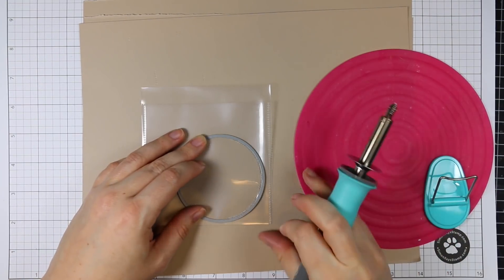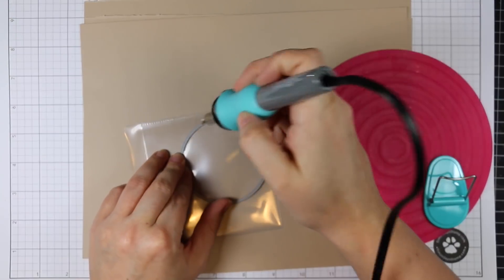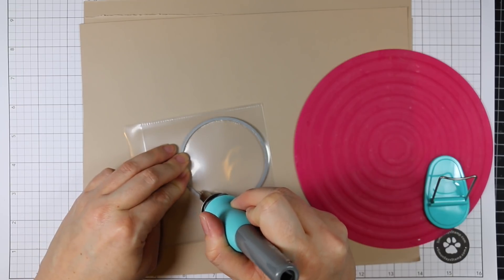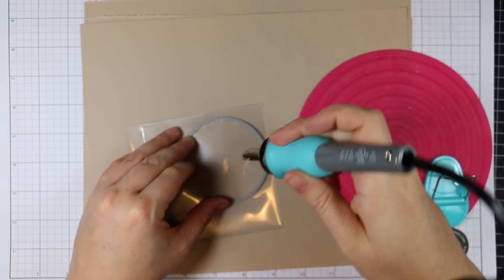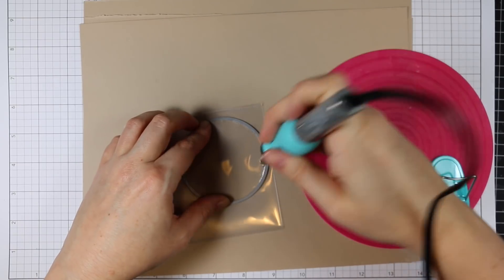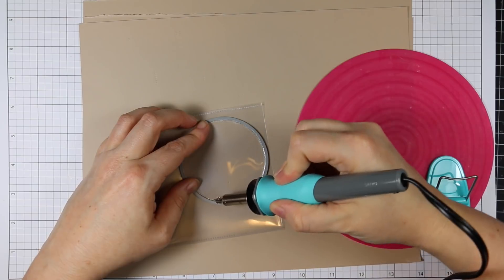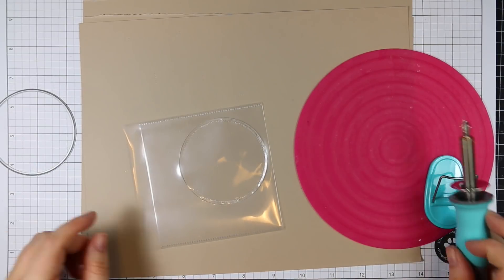I'm using my fuse tool which I had plugged in before I even started the video and really gave it a good amount of time to heat up. Then I'm using a circle die that I went through my stash and found a circle die where the inner perimeter was just slightly bigger than the opening on the Joy shaker die.